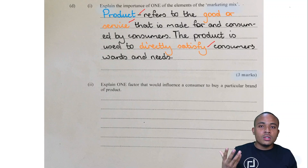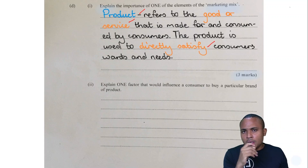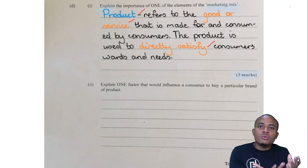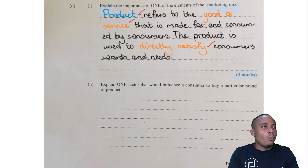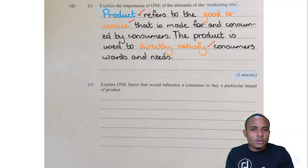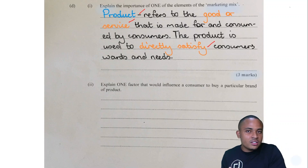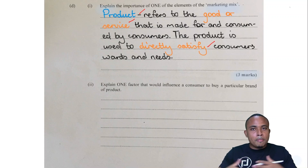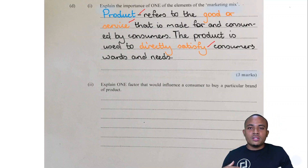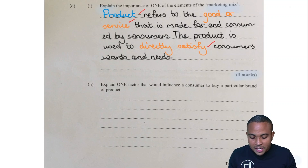For example, for a cologne, the product is the fragrance within it. Within the food industry, the product would be the actual food that is made. The food satisfies the want of hunger, while the cologne satisfies the want to smell nice. That is the importance of product.